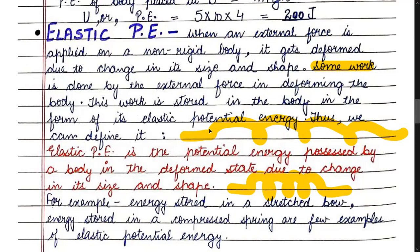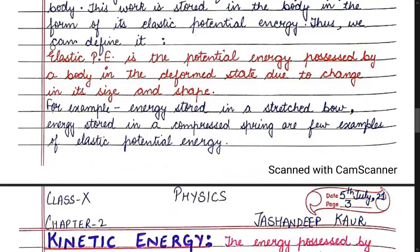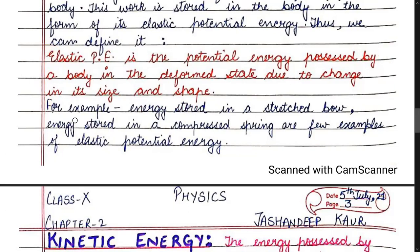The work done by the external force in deforming the body is stored in the body as elastic potential energy. Elastic potential energy is the potential energy possessed by a body in the deformed state due to change in its size and shape.